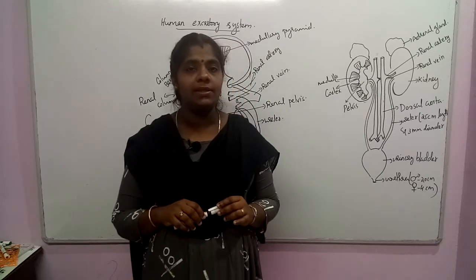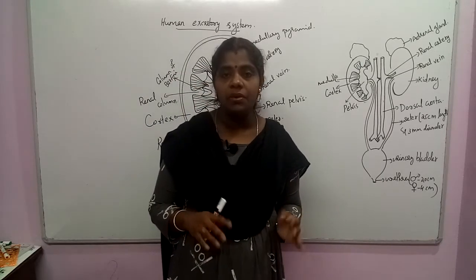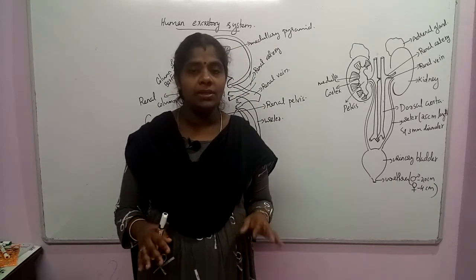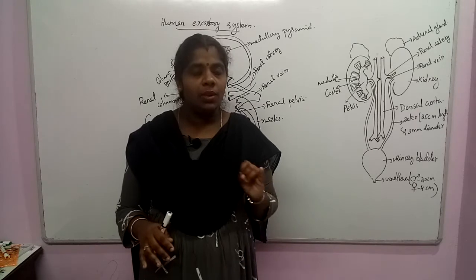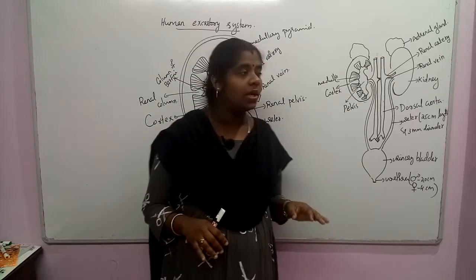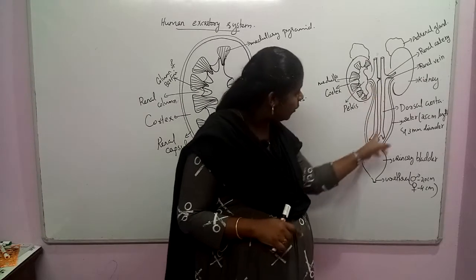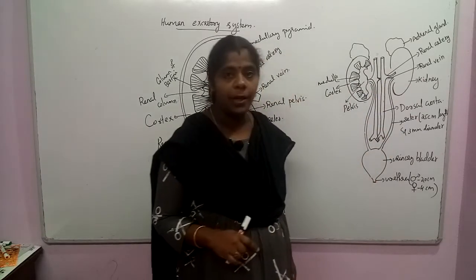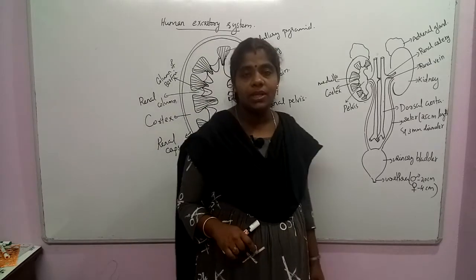We are going to study the human excretory system. The human excretory system includes a pair of kidneys, a pair of ureters, a urinary bladder, and a urethra. Now we will see where it is situated.